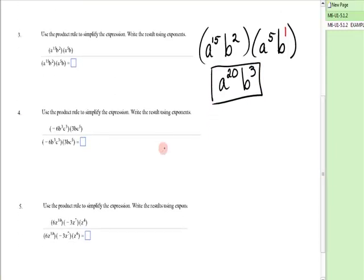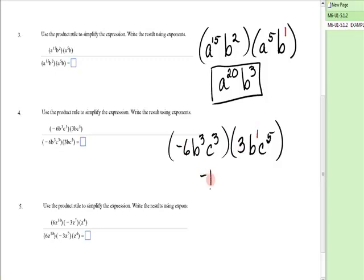Let's look at another one: -6b³c³ times 3bc⁵. Don't forget that any variable without an exponent has an implied one. Numerical coefficients are multiplied: -6 times 3 is -18. b to the 3 plus 1 is 4, and c to the 3 plus 5 is 8. The answer is -18b⁴c⁸.